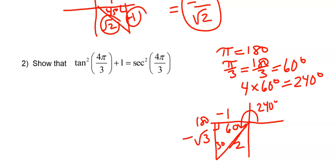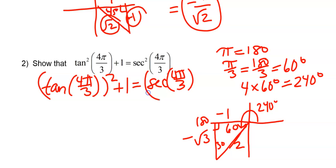So that means I could use this to find tangent and secant of 4 pi over 3 now, because I have all three sides of my triangle. Let's also recall that tangent squared of 4 pi over 3 means tangent of 4 pi over 3, the whole thing squared.